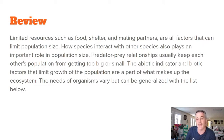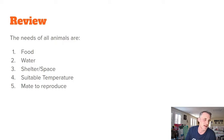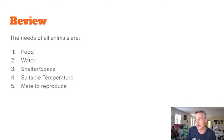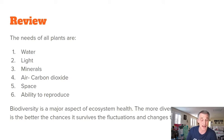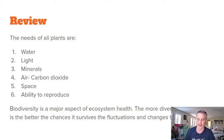The needs of organisms can vary but can be generalized. For animals, you have food, water, shelter, space or habitat, suitable temperature, and availability of mates to reproduce. Plants need access to light to make their own food, water, minerals in the soil, carbon dioxide from the air, space to grow, and the ability to reproduce — which for flowering plants can include biotic factors like pollinators such as bees or hummingbirds.